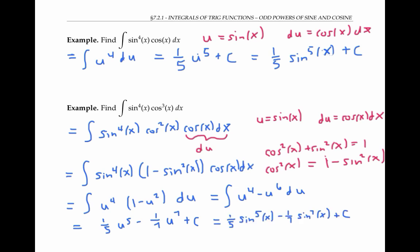To recap, we separated out one copy of cosine x to be part of our du. And then we converted the rest of the cosines into sines using the Pythagorean identity. This allowed us to do u substitution with u equal to sine x and evaluate the integral.